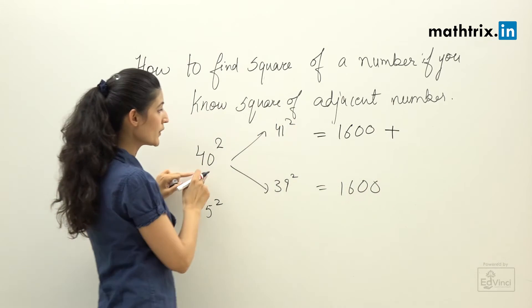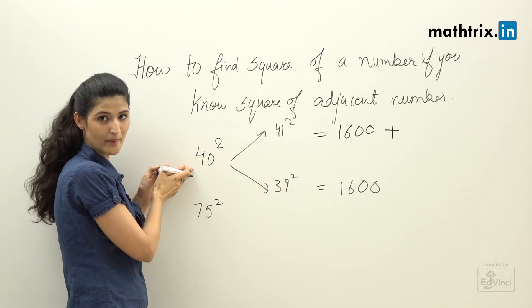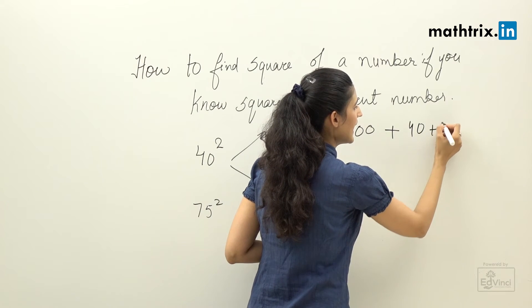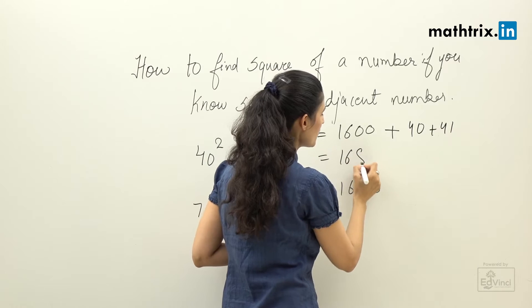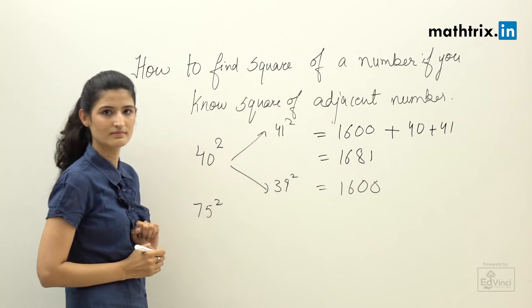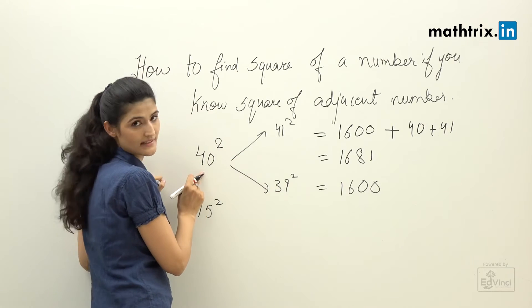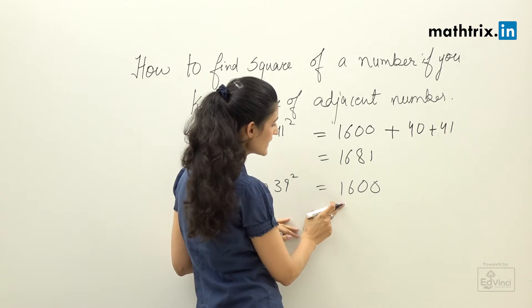Now what we'll add is the adjacent number and the number itself, which is 40 and 41. So the answer is 1681.